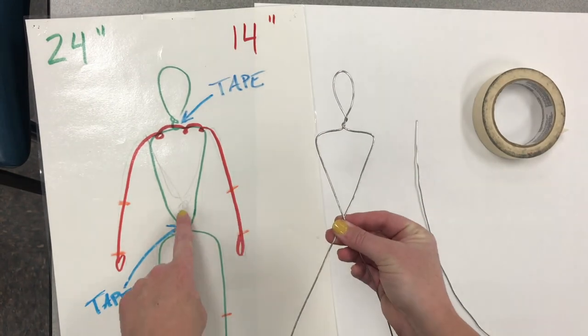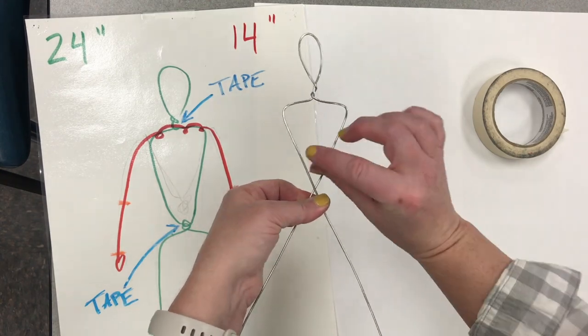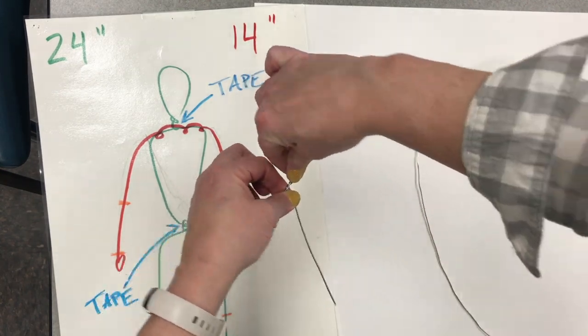For the waist, cross the wires, pinch below it, pinch above it, and twist like we did for the neck.